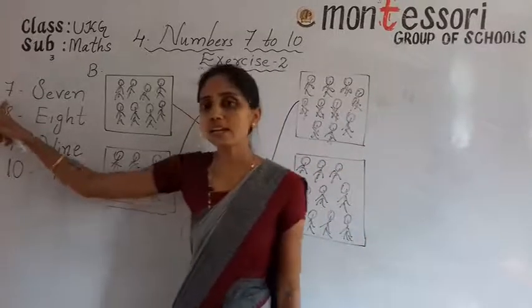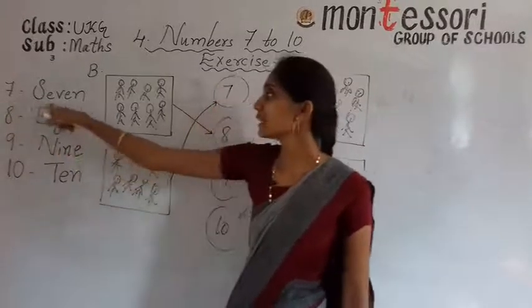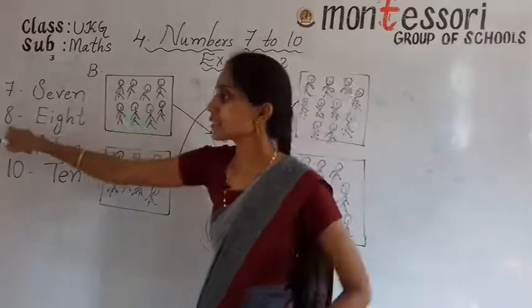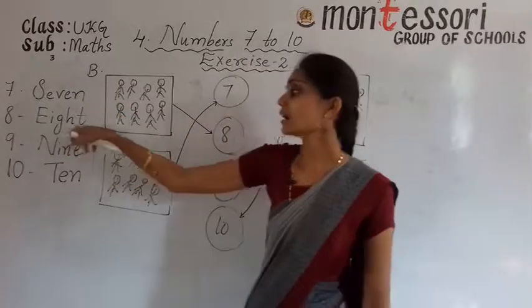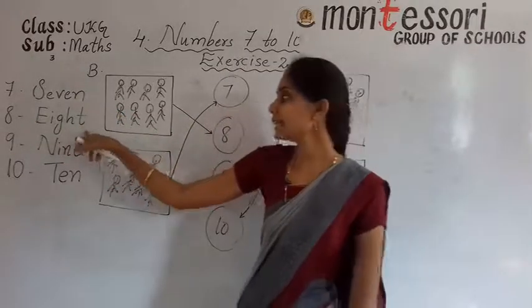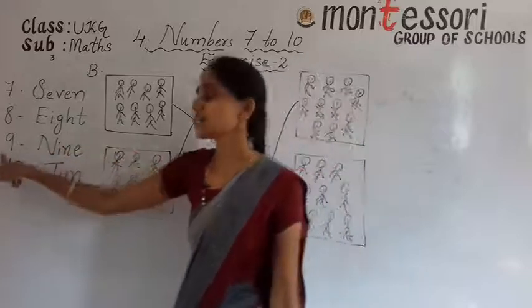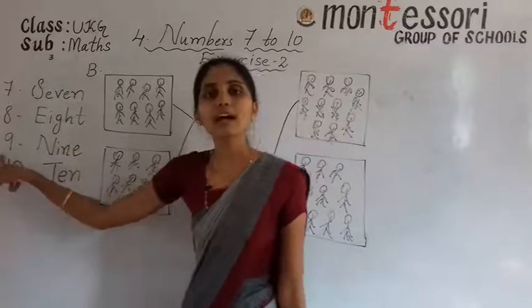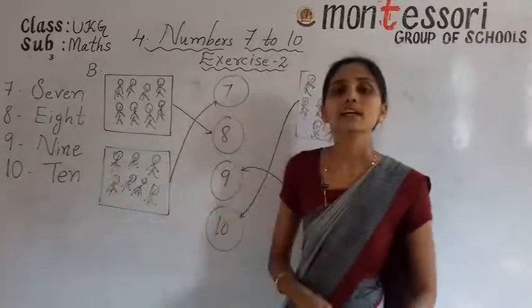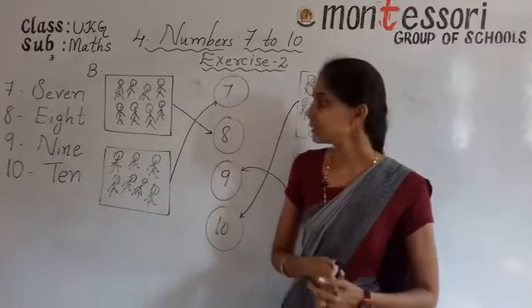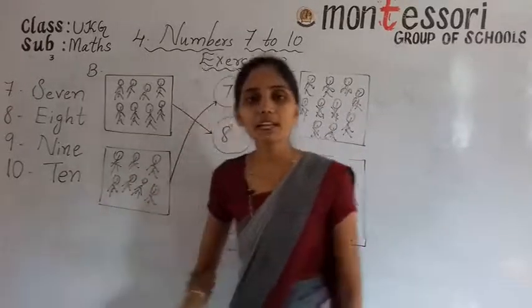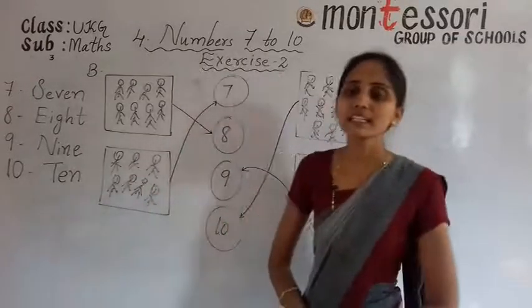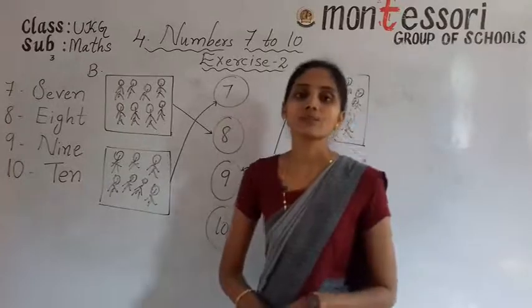What is the spelling of 7? S, E, V, E, N — seven. What is the spelling of 8? E, I, G, H, T — eight. What is the spelling of 9? N, I, N, E — nine. 10. What is the spelling of 10? T, E, N — ten.